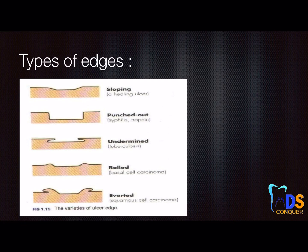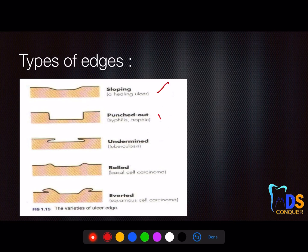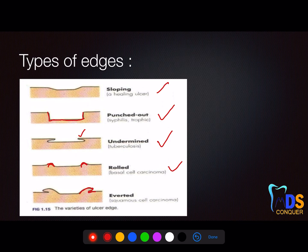First is about the types of edges. We have worked a lot on this, focusing more on examples, but this question can also be asked diagram-based — they can give the graphical representation of each type of edge and ask for the example. You can see: sloping, punched-out — we already had a case-based discussion on punched-out ulcer in syphilis — and then undermined, where the outermost will be protruded while the next layer is undermined, and then rolled and everted edges.